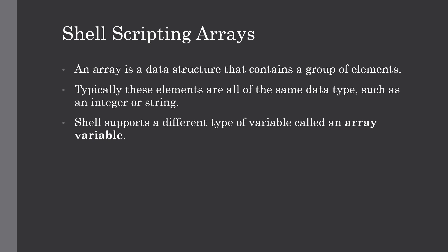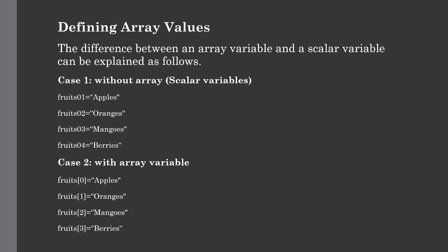Let me show you how to define array values, but first let me show you the difference between an array variable and a scalar variable. Suppose you want to represent names of various fruits as a set of variables. Each individual variable would be a scalar variable — that's case one, where we create separate variables for each value. In case two, we create an array by assigning an index to each item. For example, fruits is our array name, and the values are assigned to indexes 0, 1, 2, and 3.